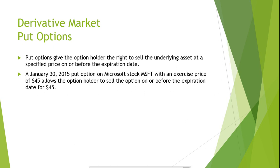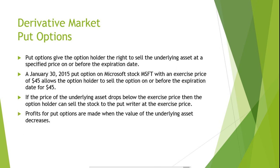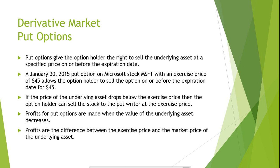If the price of the underlying asset drops below the exercise price, then the option holder can sell the stock to the put writer at the exercise price. Profits for put options are made when the value of the underlying asset decreases. As the underlying asset's value decreases, the profits are increased for the holder of the put option. When the holder of a put option exercises the option, his profits are the difference between the exercise price and the market price of the underlying asset.